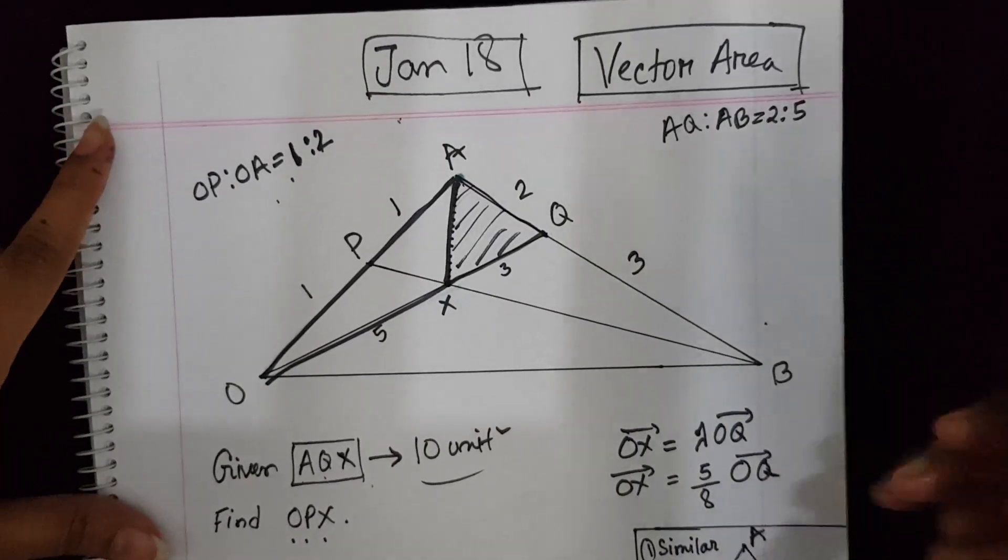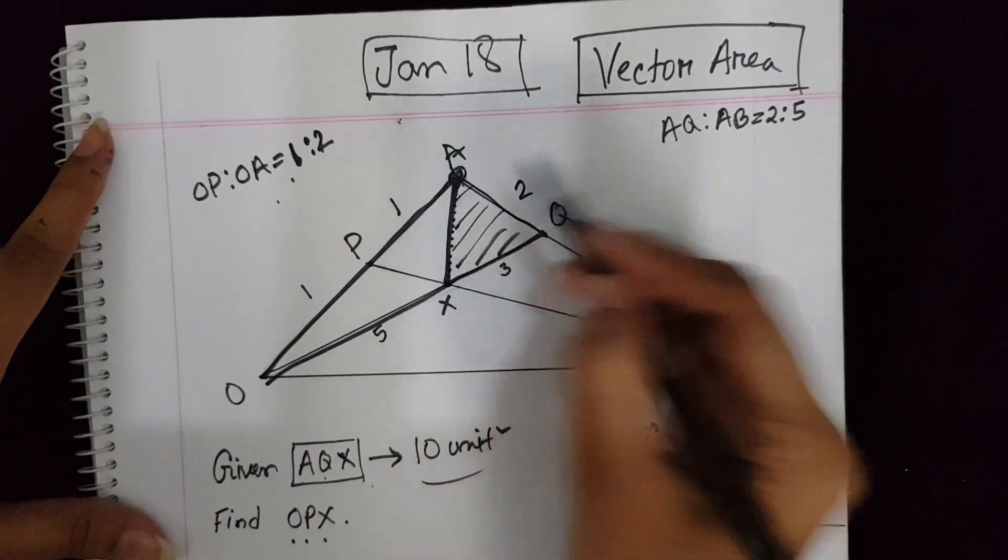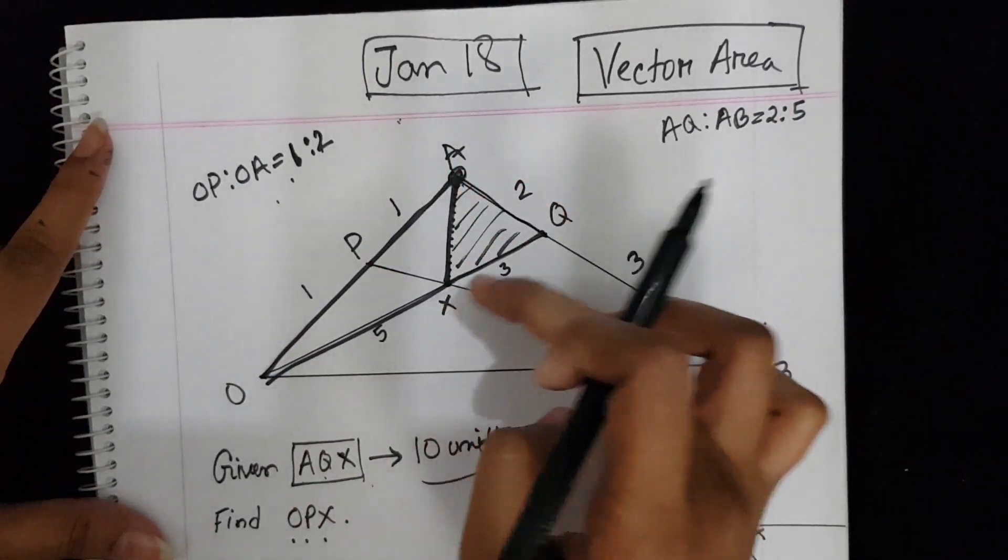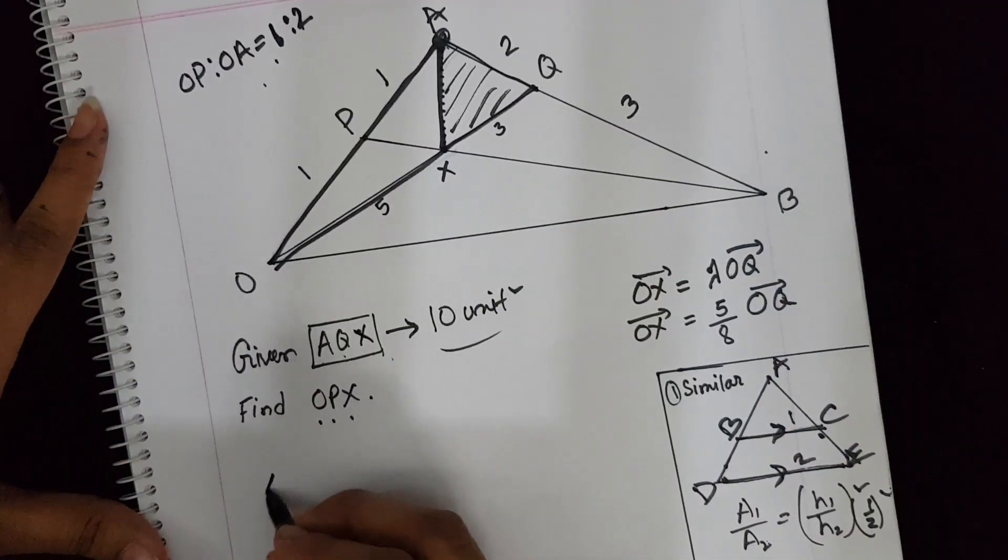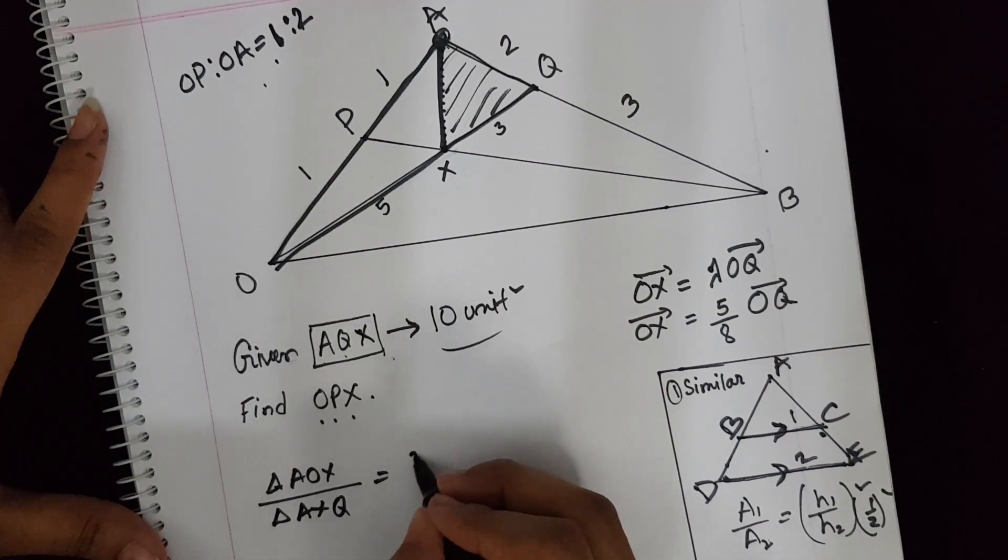So suppose here triangle AOX and AXQ. The base ratio is 5 to 3. So we can write triangle AOX by triangle AXQ equals 3 by 5.